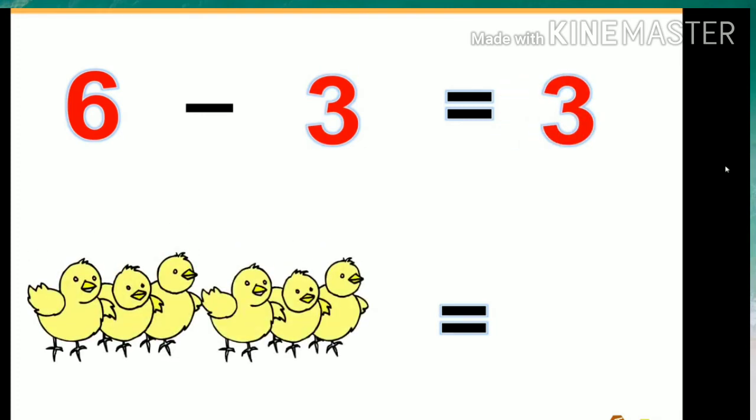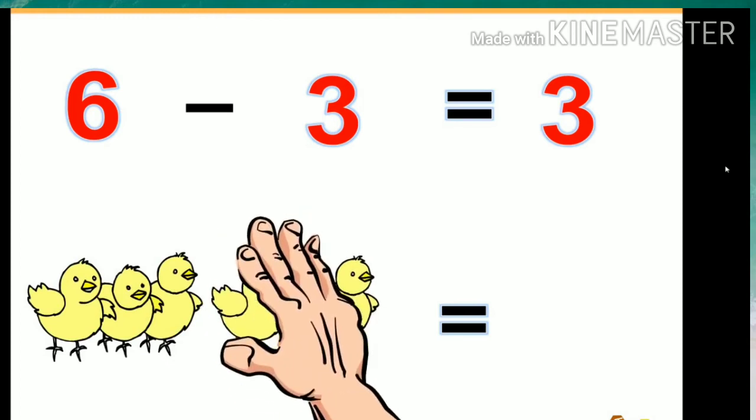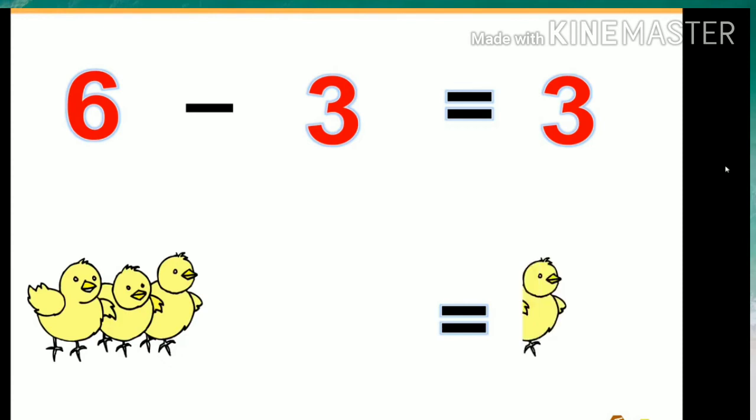6 minus 3 equals 3. We have six birds. If we take away three of those birds, there are only three birds left.